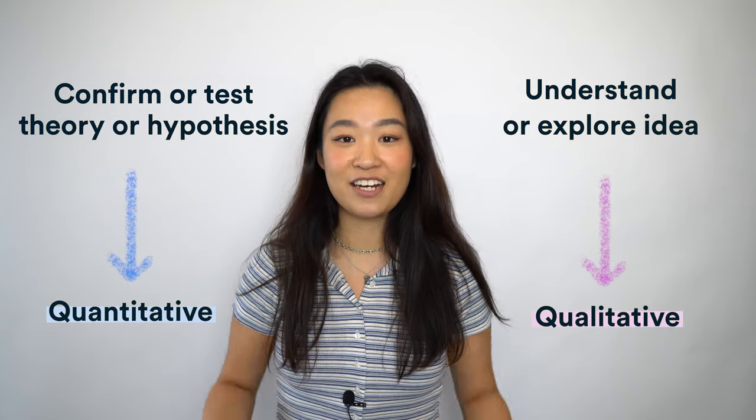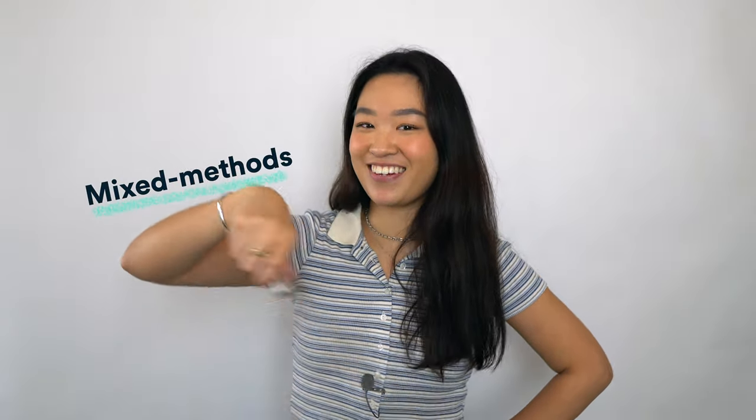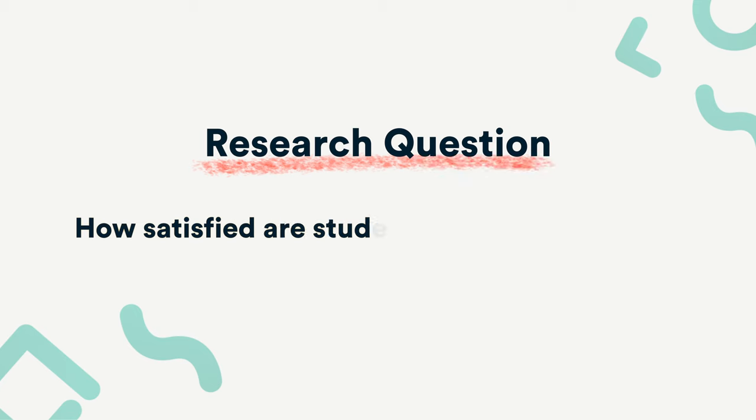then you should go for the qualitative approach. There's also a third approach, which combines quantitative with qualitative, and this is called the mixed method. Let's see how it applies in a concrete example, shall we? We want to find out how satisfied students are in their studies. I'll show you how both approaches can answer this question.